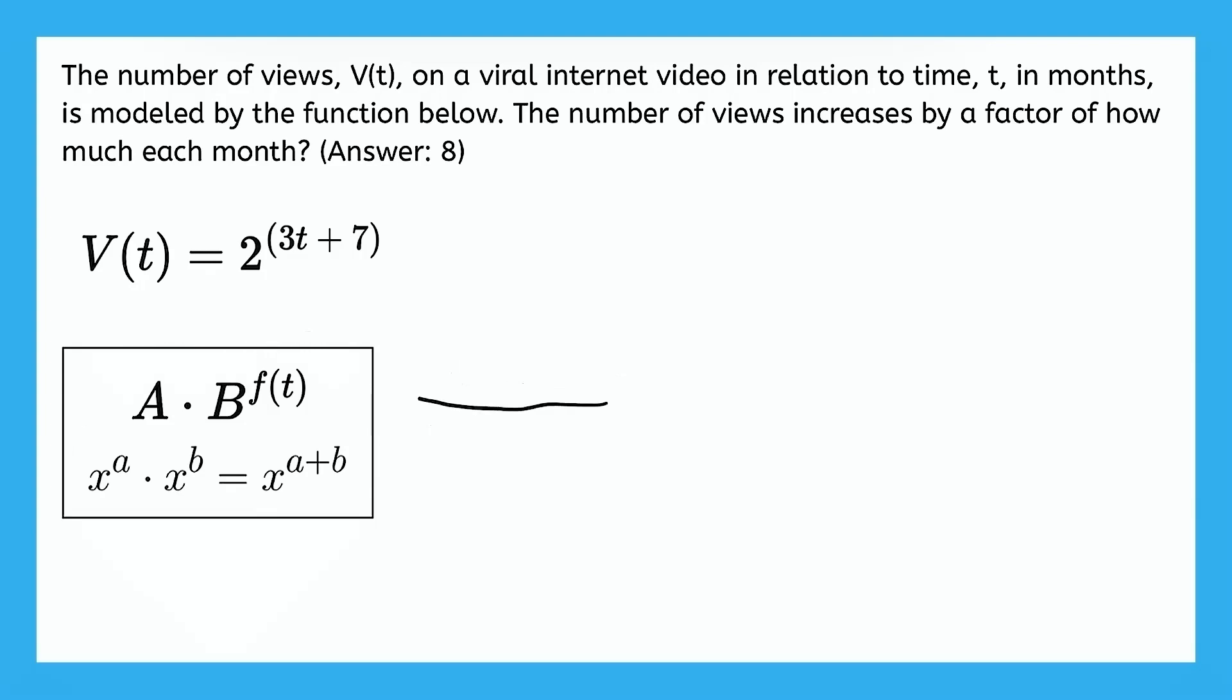So this first item in the box is the standard form of an exponential model that we're used to seeing. And the second item in the box is one of the properties of rational exponents that we learned in the past. So let's see how we can use both of those items in order to answer this question.